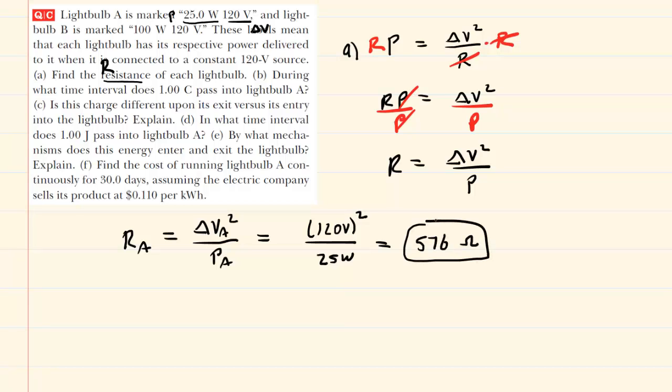So that's the answer for the resistance of light bulb A. For light bulb B, it's the same idea. We're going to take the potential difference of 120 volts, square it, and then divide by the given power, which was 100 watts. And when we do that, we should get 144 ohms. So these are the correct answers for part A of the question.